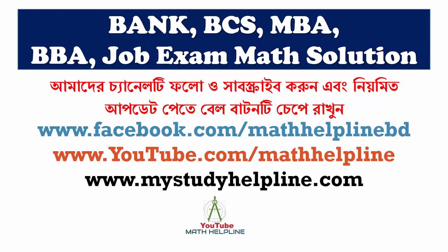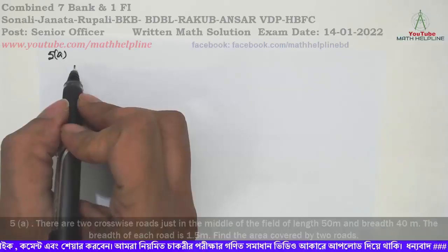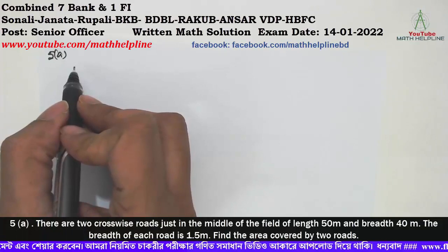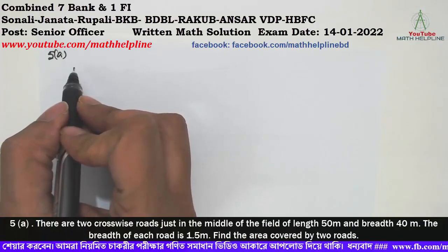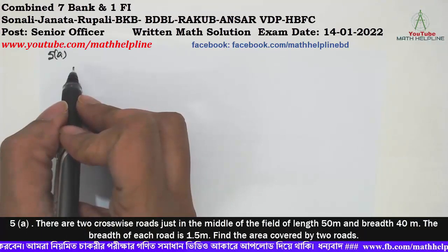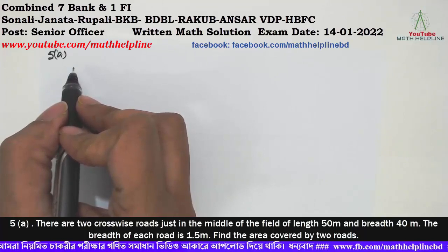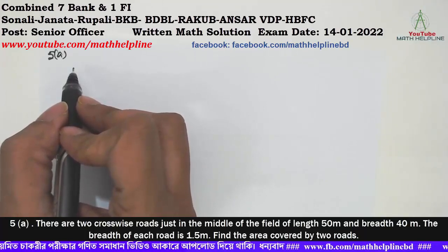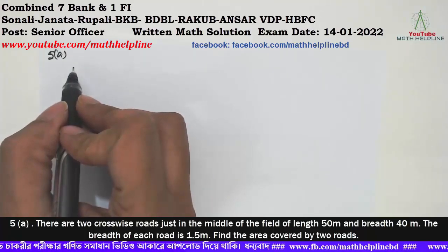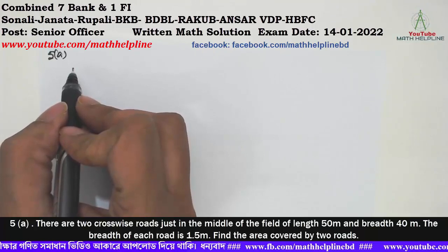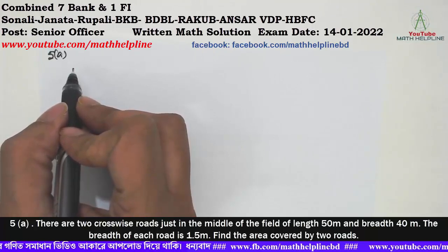Now we will start with problem number 5A. There are two crossways roads just in the middle of a field of length 50 meters and breadth 40 meters. The breadth of each road is 1.5 meters. Find the area covered by the two roads.